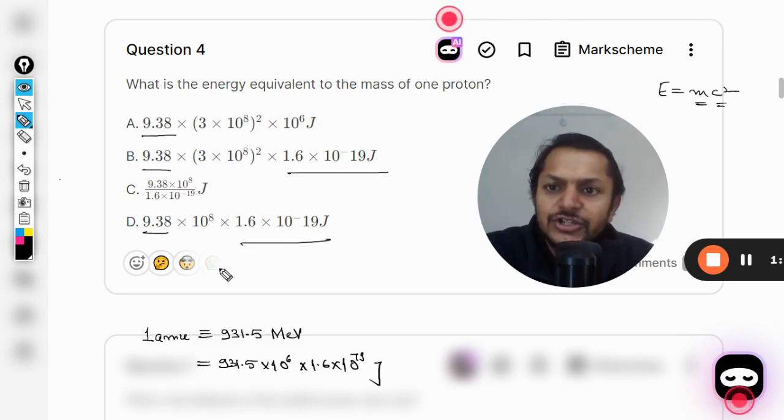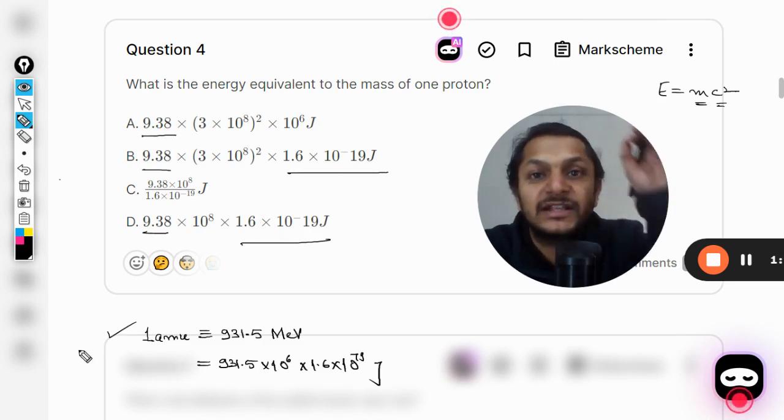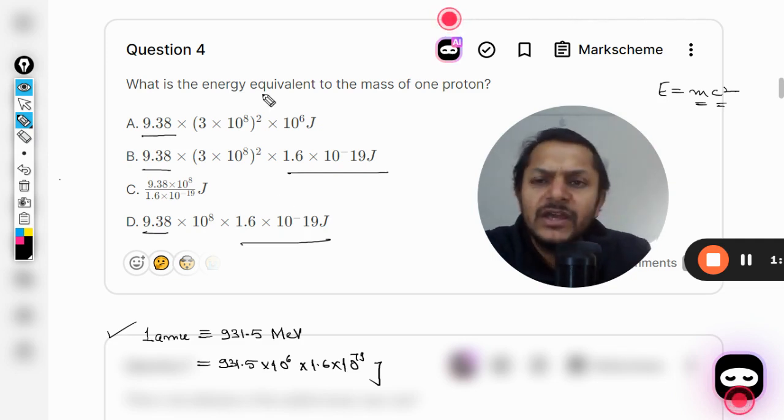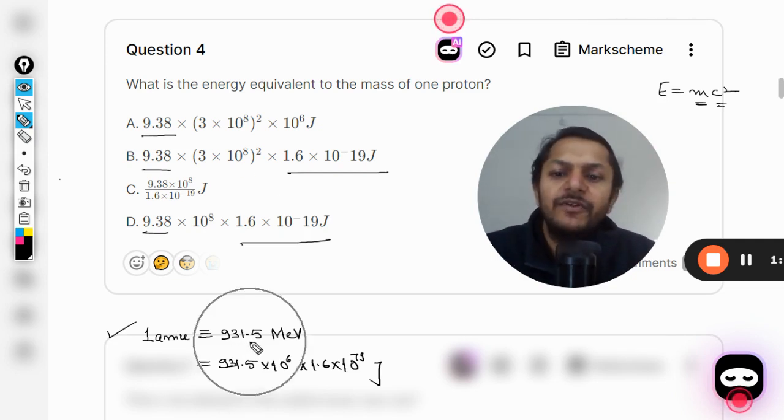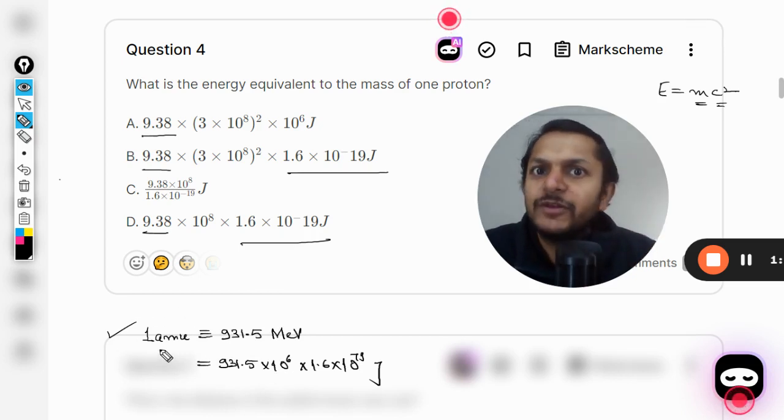The possibility is that they are basically using this method, but they are using 938 and we are using 931. Why is that? I tell you, this is energy equivalent for the mass of one amu, but what is the mass of one proton? Is it one amu? No, it is more than one amu.